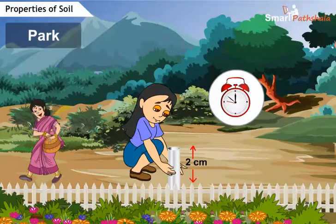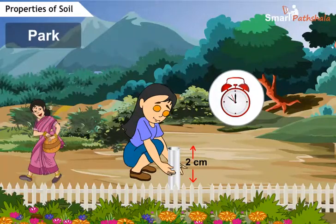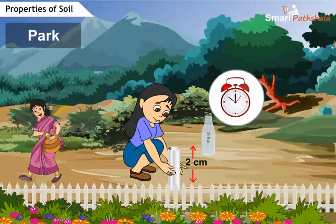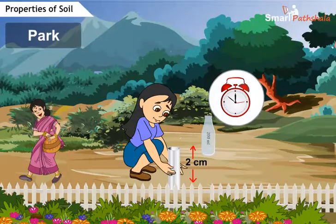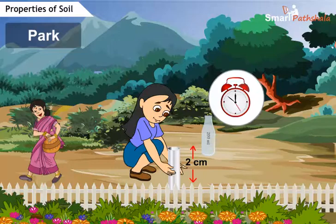At the park where you select the soil, place the pipe about 2 centimeters deep in the ground. Take an empty 200 ml bottle, fill it with water, and pour 200 ml of water into the pipe slowly. Note the time when you start pouring the water and note the time again when all the water has percolated, leaving the pipe empty.